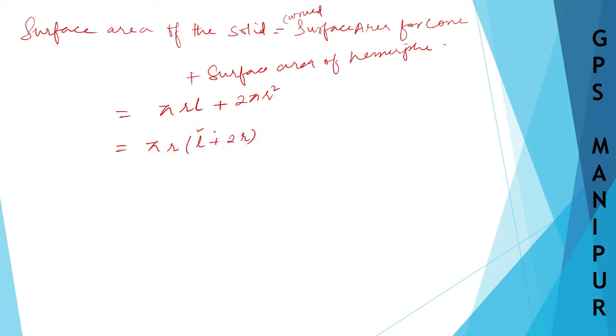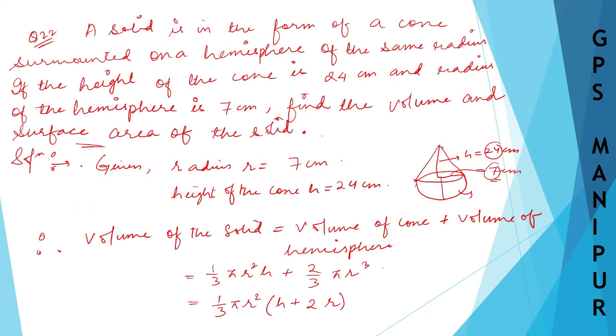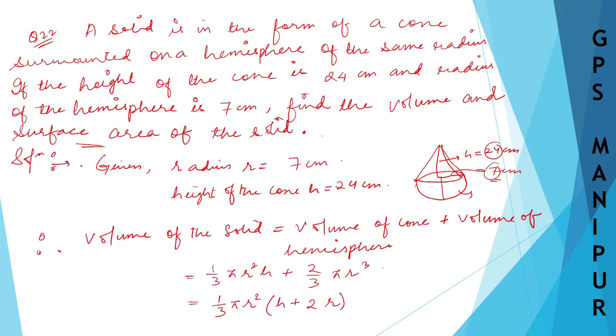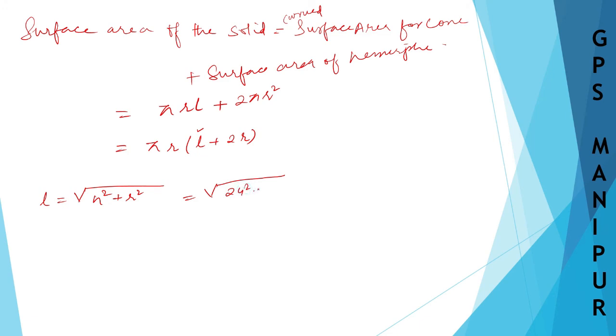Here l means the slant height. L will be equal to root over H² plus R². H is 24 and R is 7, so √(24² + 7²). 24 squared is 576, plus 49, which equals √625, which equals 25. So I got l as 25.